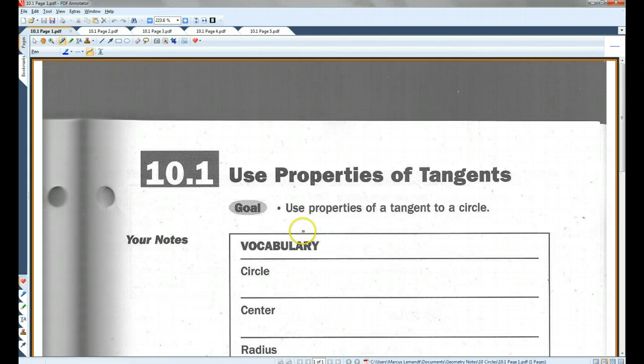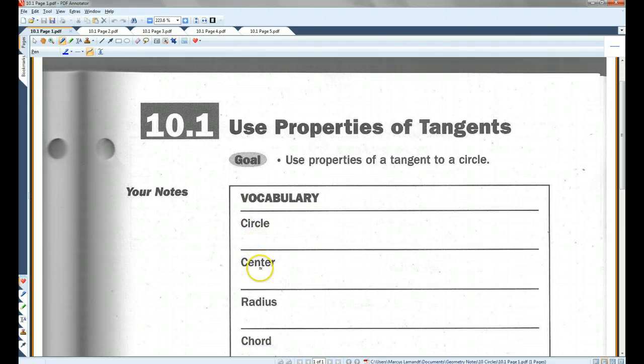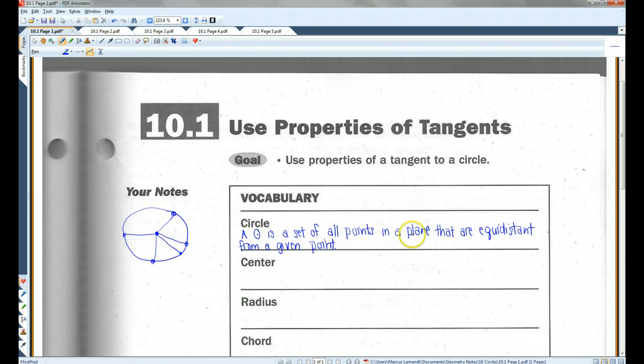All right, you guys. Chapter 10, Circles. 10.1, Use Properties of Tangents. I think all of you guys already know what a circle is. A circle is a set of all points in the plane that are equidistant from a given point.